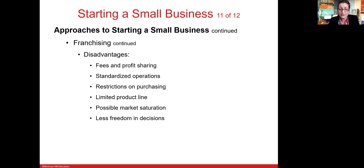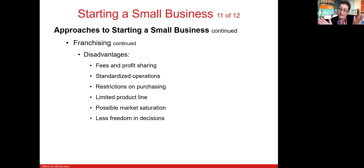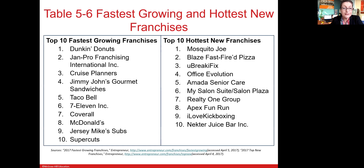The disadvantages of franchising — it's going to cost you money. You'll have to pay a fee, and sometimes these can be quite large. Standardisation, while an advantage, can also be a disadvantage because you're not able to customise as you might if you were an independent small business owner. For example, there may be a narrow product line and limited freedom in decision-making associated with that product line. Here are examples of fast-growing franchise systems, with Dunkin' Donuts at the top of the fastest-growing list, and another list for hottest franchises that changes from year to year.